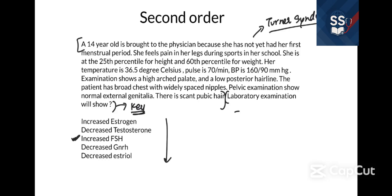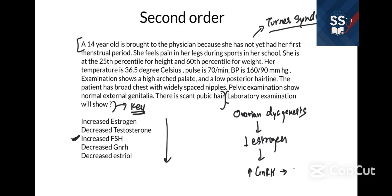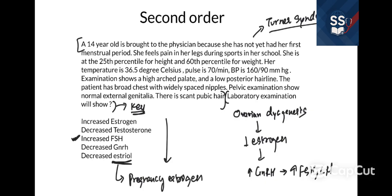The reason increased FSH is the answer: in Turner's syndrome you have ovarian dysgenesis, which causes decreased estrogen. Because of decreased estrogen, the negative feedback loop breaks, leading to increased GnRH, and consequently increased FSH and LH. Decreased estrogen itself is not the answer because estrogen as a pregnancy hormone is not relevant here. So first you make the diagnosis of Turner's syndrome, then figure out the hormonal consequence — that's a second-order question.